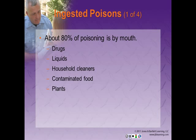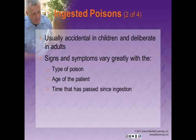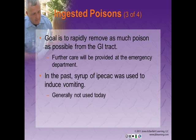Ingested poisons enter the body by mouth, and about 80% of all poisonings occur in this manner. These include drugs, liquids, household cleaners, contaminated food, and plants. Ingested poisoning is usually accidental in children but deliberate in adults. Signs and symptoms vary greatly with the type of poisoning, the age of the patient, and how long since ingestion. Your goal as an EMT is to provide rapid removal of as much poison as possible from the gastrointestinal tract.